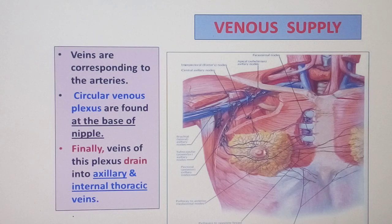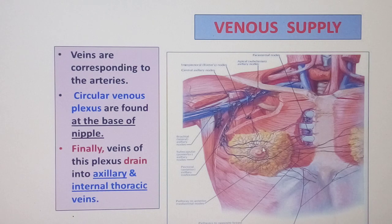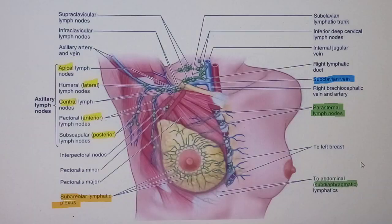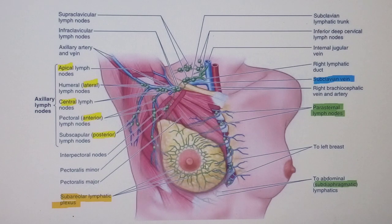The breast also needs robust lymphatic drainage. There is a sub-areolar lymphatic plexus of Sappey (S-A-P-P-E-Y) — someone's name, so it begins with a capital S — located around the areola. This plexus drains the breast tissue from the central region to either side.